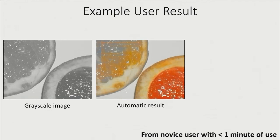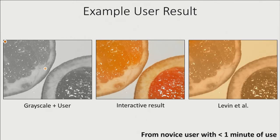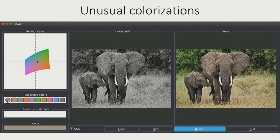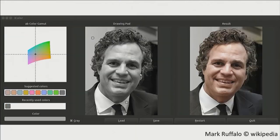Here's an example from the user study. The automatic result is uncertain. A novice user added two points, which fill in the rest of the orange. Let's see a before-and-after comparison. We also show the results generated by Levin et al.'s system with the same user inputs. Sometimes users just want to go wild, and our system is happy to follow their intention. We can also change the color for actor Mark Ruffalo's face — there are a few color choices, and maybe the green works best for him.